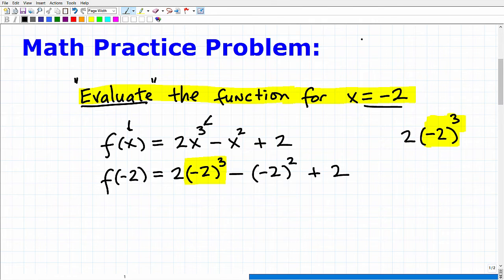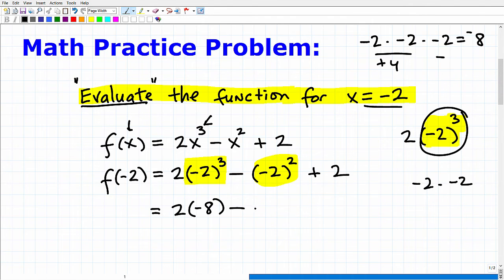So what is negative 2 cubed? It's going to be negative 2 times negative 2 times negative 2. 2 times 2 is 4. 4 times 2 is 8. But what's the sign? A negative times a negative is going to be positive. Then I have a negative, so it's going to be negative 8. So all of this is going to be equal to negative 8. And let's go ahead and just write that down here. So 2 and negative 2 cubed is negative 8 minus, and we'll get back to cleaning this up here in a second. But let's go ahead and deal with this here now. Negative 2 squared is what? So that's going to be negative 2 times negative 2. That's a positive 4. So let's write that as a positive 4 plus 2.